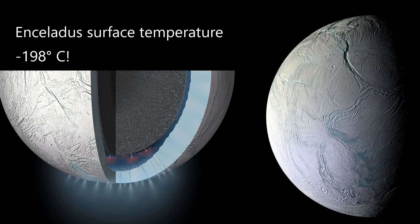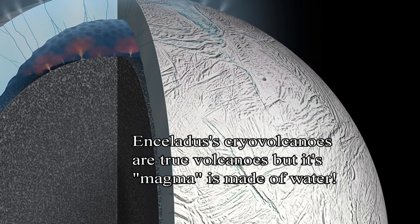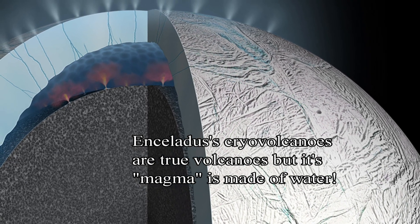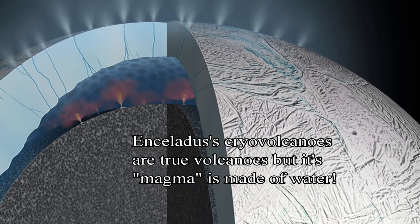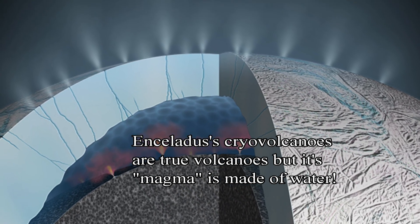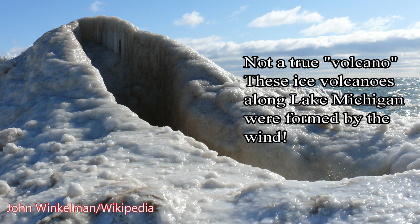The surface temperature of Enceladus is minus 198 degrees Celsius, while the temperature of the eruption material coming out of the ice volcanoes is 200 to 400 degrees Celsius warmer than the surface. The ice or cryovolcanoes of Enceladus are therefore considered to be true volcanoes — the only difference is they erupt water and ammonia instead of molten rock.